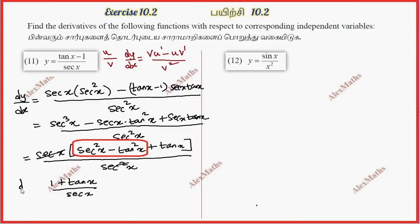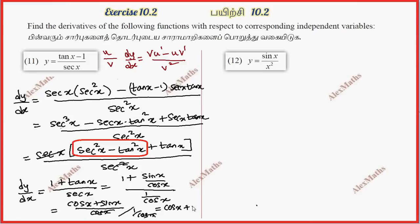We have the answer in basic terms, we will simplify using sin and cos. So 1 plus sin x by cos x, whole divided by 1 by cos x. Using the numerator LCM, we get cos x plus sin x, and the LCM cancels. So the two cancel, remaining answer is 1 by cos x plus sin x.